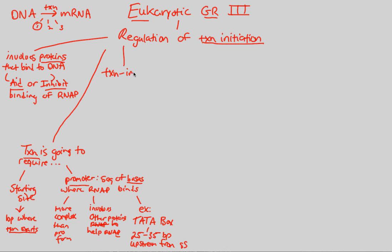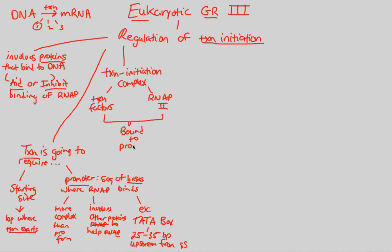In order for this to all happen, you have to create something known as a transcription initiation complex. This involves two things: transcription factors, which are critical in making sure transcription happens or doesn't happen, and also RNA polymerase — specifically RNA polymerase II. When both of these are bound to the promoter region, initiation happens. Transcription factors can either aid or inhibit the binding of RNA polymerase — these two concepts are very closely related.